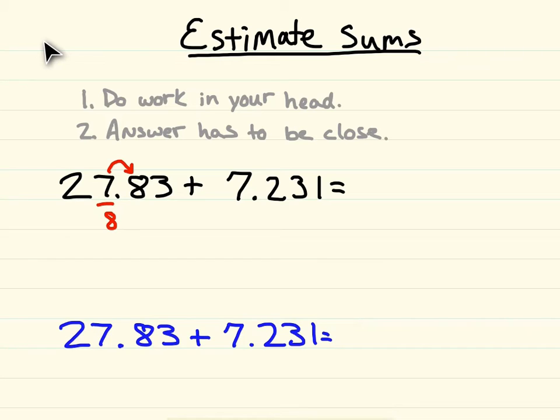Everything to the left of the 7 is going to stay the same. Everything to the right will just turn to zeros. Since those zeros don't mean anything, it just rounds to 28.